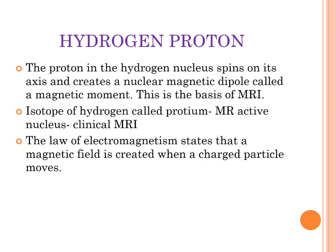First we shall learn about the hydrogen proton. The hydrogen proton spins on its axis, and when it is applied to an external magnetic field it precesses around the axis of that magnetic field. The hydrogen proton is a positively charged particle, so it spins on its axis and creates a nuclear magnetic dipole called a magnetic moment, and this is the basis of MRI. The hydrogen proton thereby develops a magnetic field around it and behaves as a small magnet.